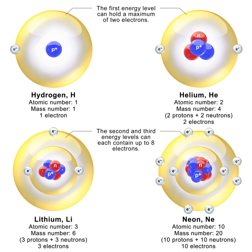The neutron is essential to the production of nuclear power. In the decade after the neutron was discovered by James Chadwick in 1932, neutrons were used to induce many different types of nuclear transmutations. With the discovery of nuclear fission in 1938, it was quickly realized that if a fission event produced neutrons, each of these neutrons might cause further fission events in a cascade known as a nuclear chain reaction.